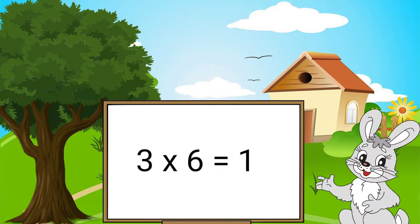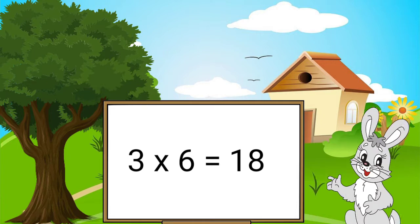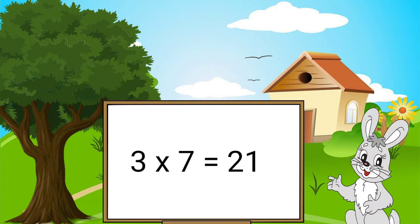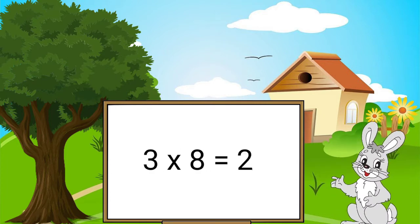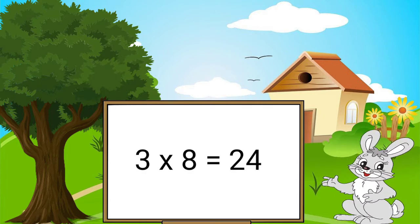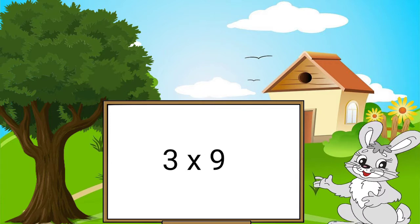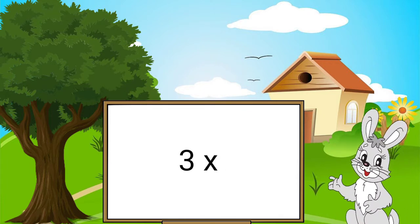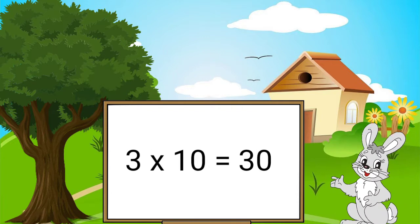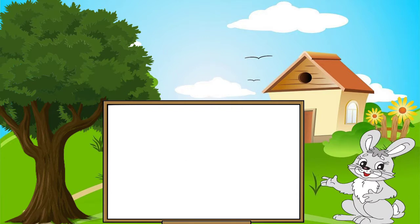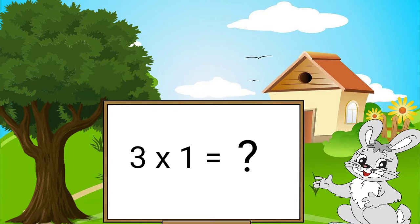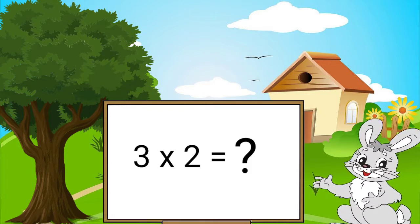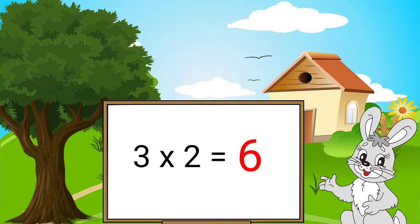Three sixes are eighteen. Three sevens are twenty-one. Three eights are twenty-four. Three nines are twenty-seven. Three tens are thirty.